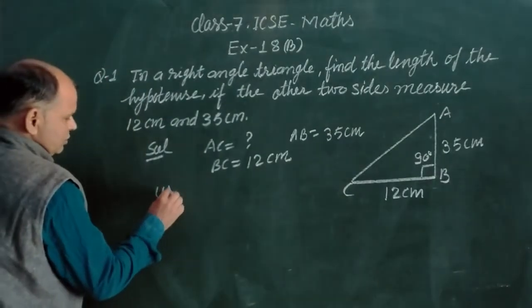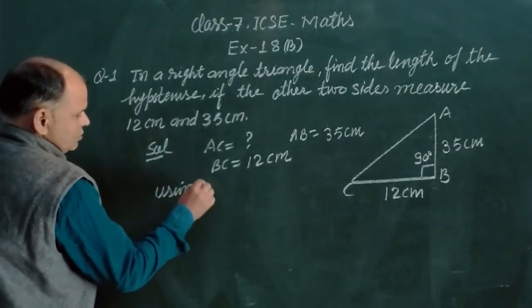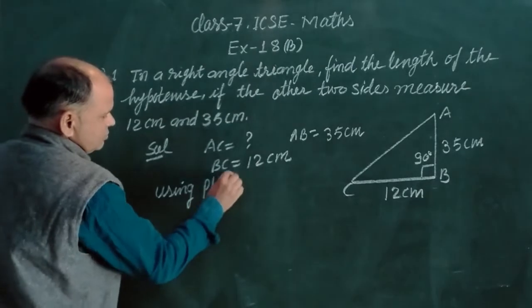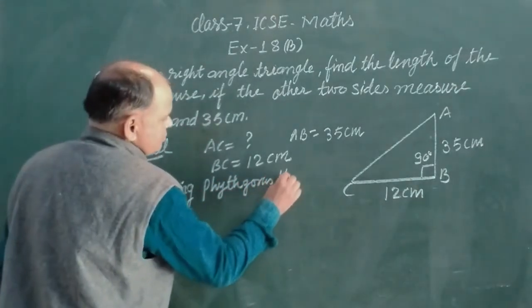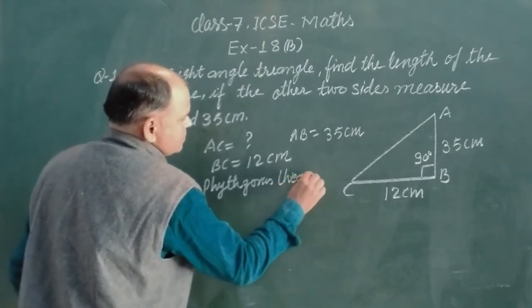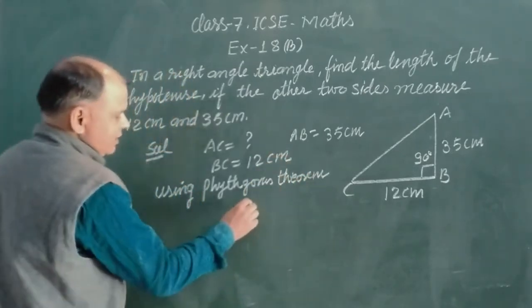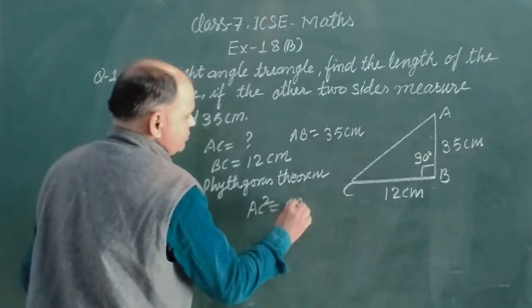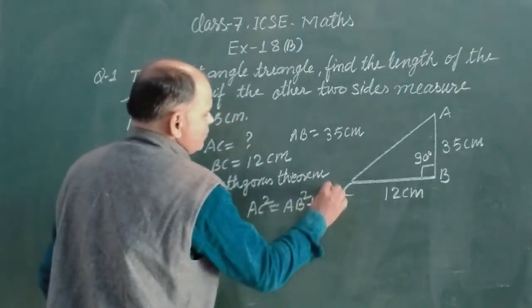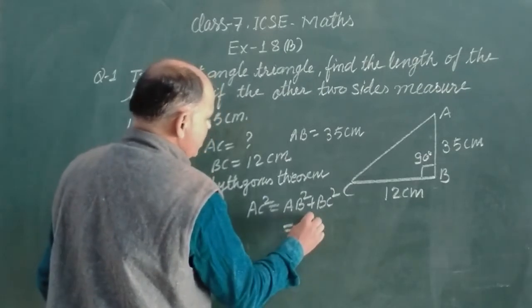So using Pythagoras theorem, we have AC square equal to AB square plus BC square.